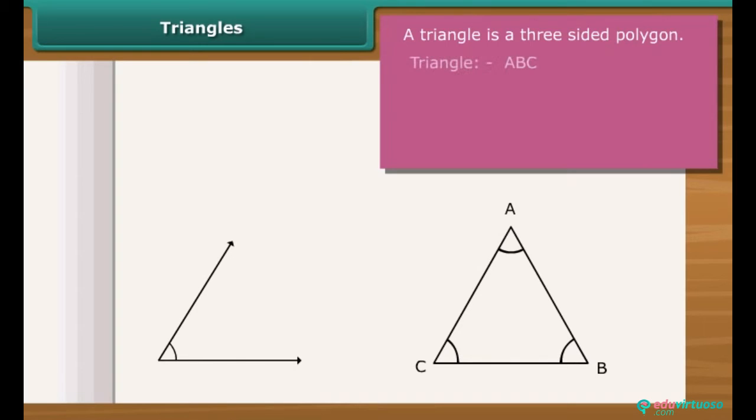In the given figure, ABC is a triangle. AB, BC and CA are three sides. A, B and C are three vertices.